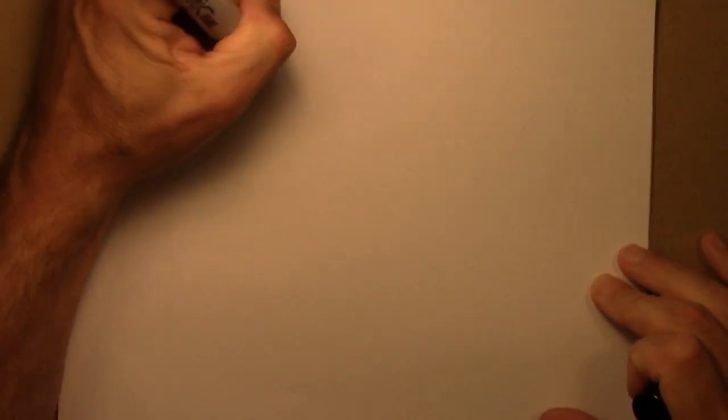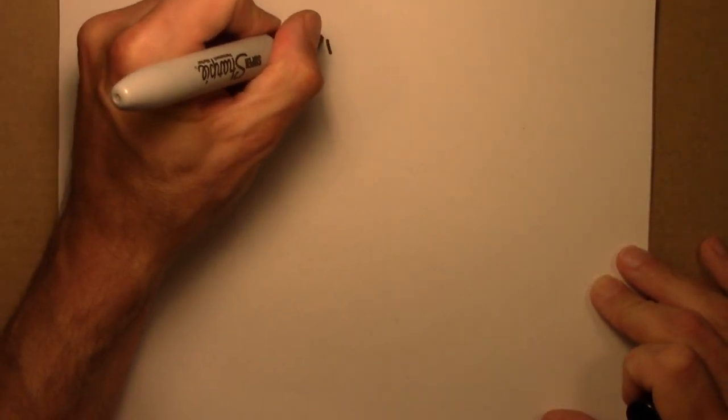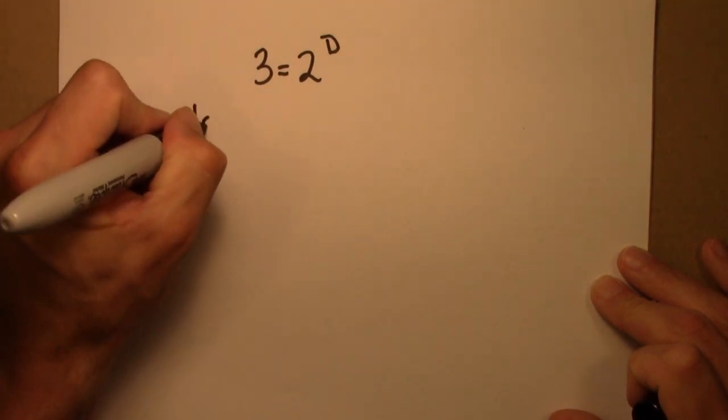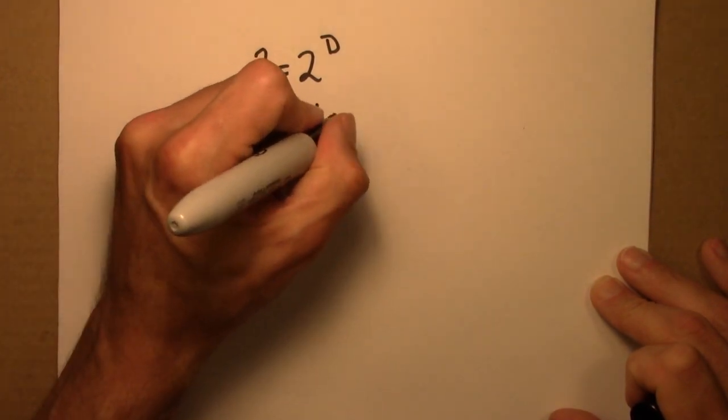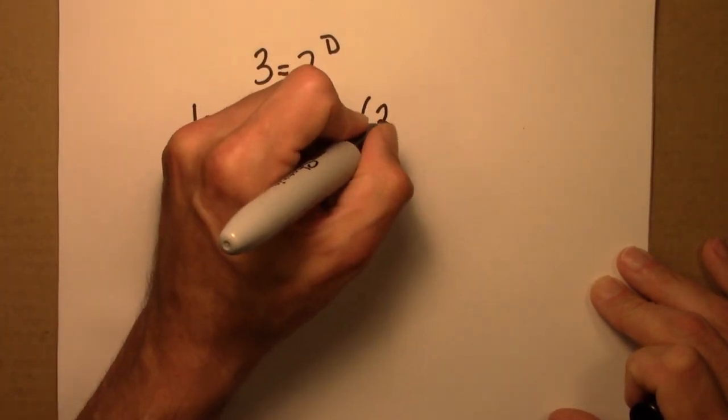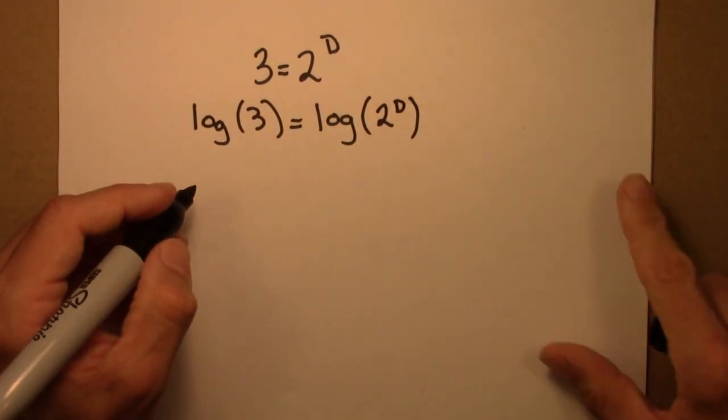So the equation was 3 equals 2 to the d. We'll take the log of both sides. Use the exponent property of logs.